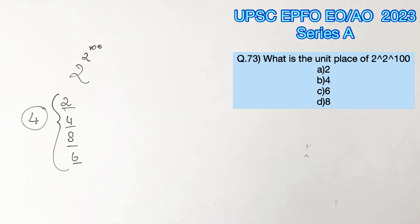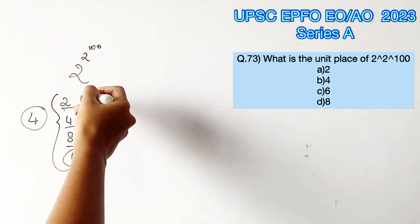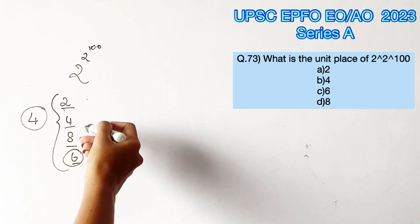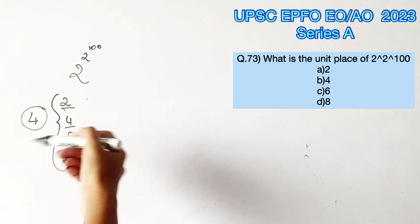And if the power of 2 is divisible by 4, we can say that the unit digit of the number formed would be 6. And if the number exceeds the multiple of 4 by 1, we know that the unit digit would be 2. Or if it exceeds by 2, the unit digit would be 4. If it exceeds by 3, the unit digit would be 8.